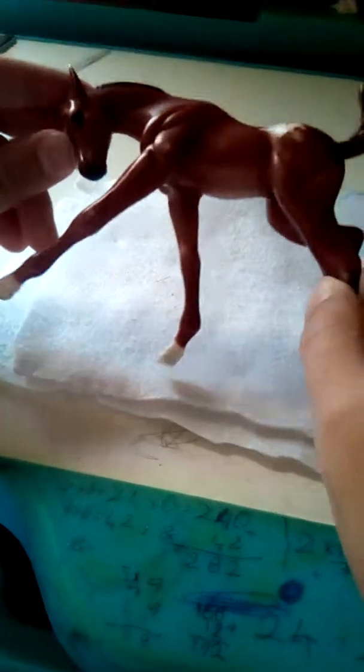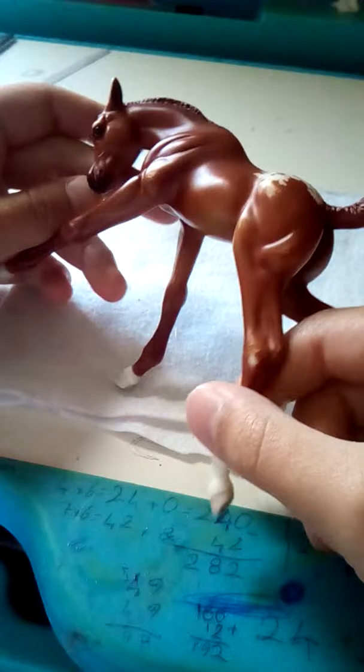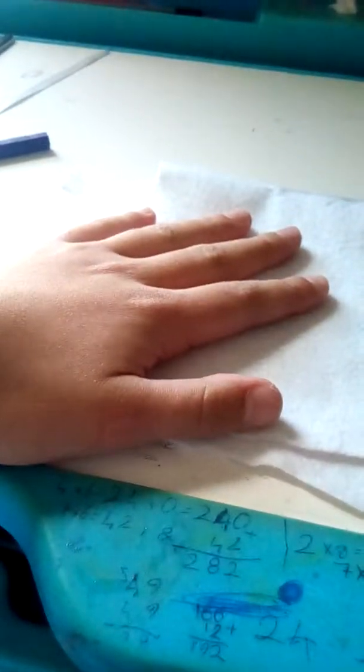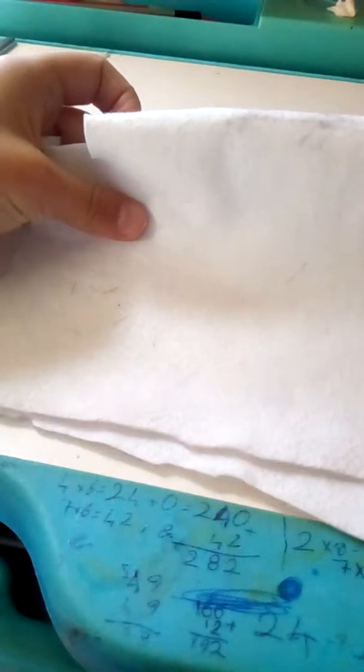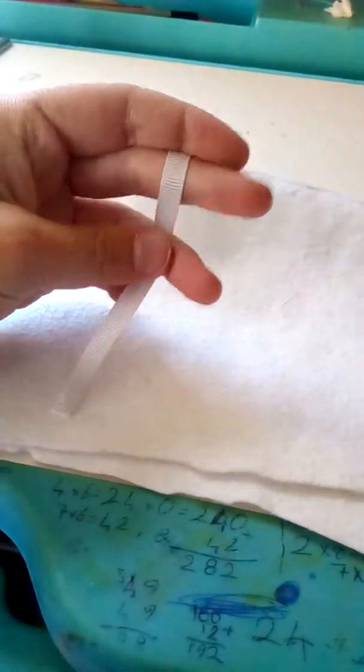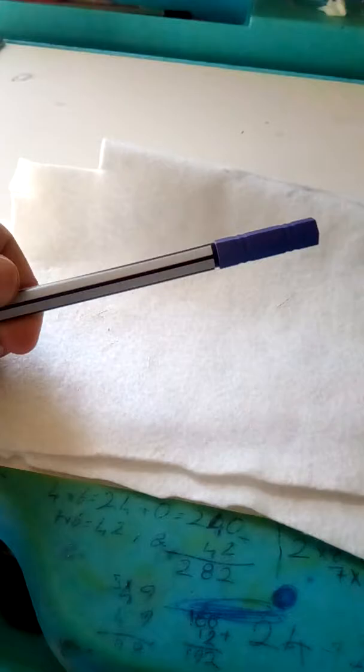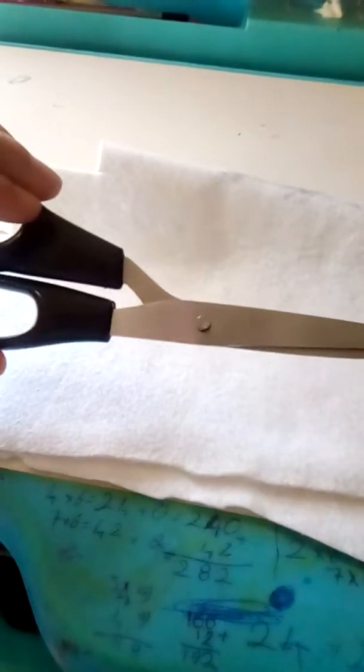You'll need your Breyer foal. I've chosen an Appaloosa foal. You'll need felt, any color of your choice, along with ribbon, any color of your choice too, pen and scissors.